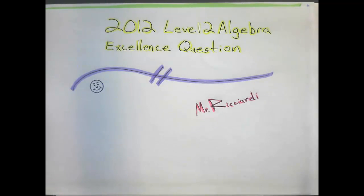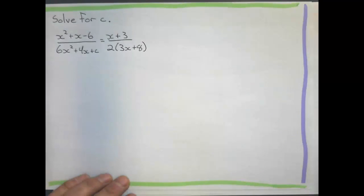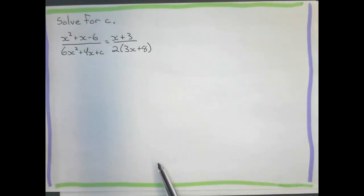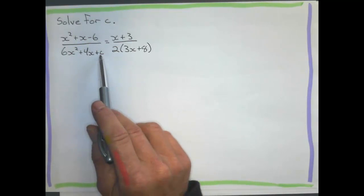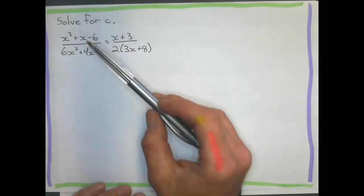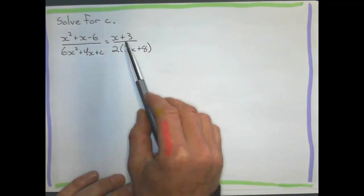All right, I'm going to show you how to work out one of these excellence questions from 2012 Level 2 Algebra. It's an excellence question, and we'll see how we do. Here is the question, one of them, and in this equation here we want to solve for this letter right here, solve for C. It looks really complicated,